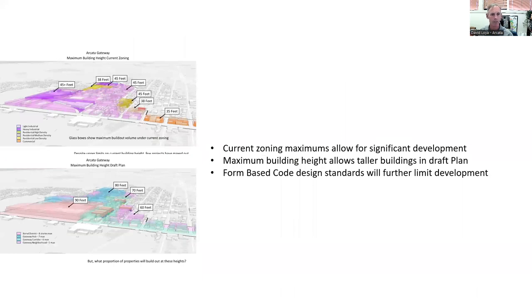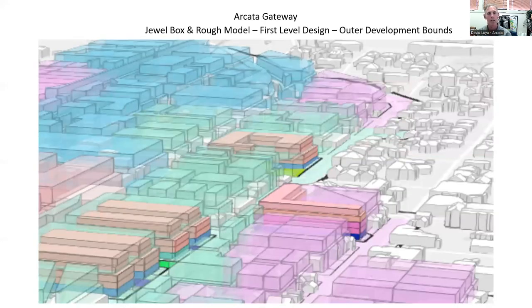Summarizing quickly: current zoning allows for 45-foot-tall buildings in general — a four-story building in most of the plan area. Maximum building height in the draft plan is taller than what's currently allowed. And form-based code design standards will further limit future development. So we're not anticipating development potential that looks like these glass box visions. Let's dig into the design process to understand how those controls can affect further limitations on development beyond these glass boxes.